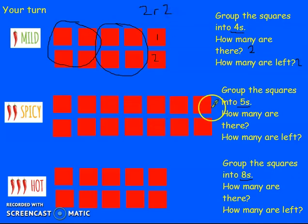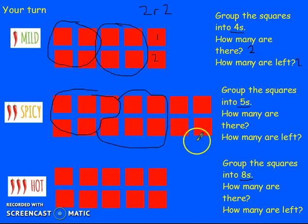The next one, groups of 5. So there's a group of 5. There's a group of 5. And there is a group of 4. So we have 1, 2 groups of 5 with 4 remaining. So it would be 2 remainder 4. Well done.